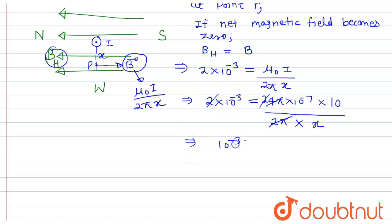So 10⁻³ equals to 10⁻⁶/x, therefore x equals to 10⁻⁶/10⁻³. So this will be equals to 10⁻³ meter.